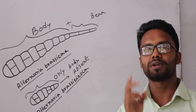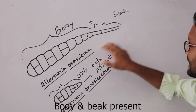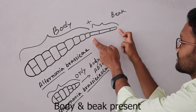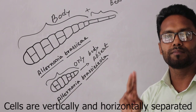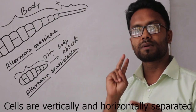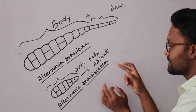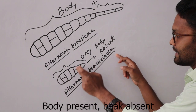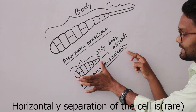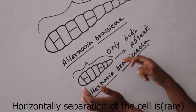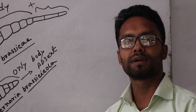We have two parts of Alternaria brassicae — we have the body and the back. We have two options: we have our body and back, and we have our way to see only the body.